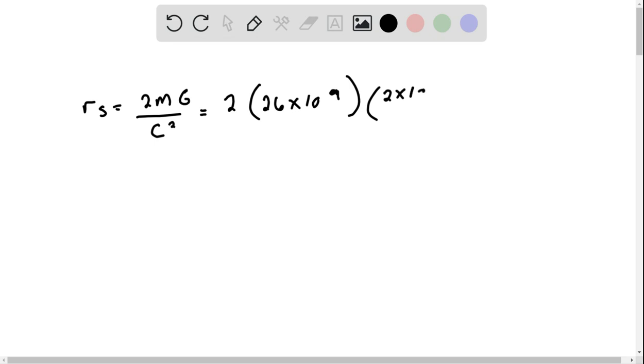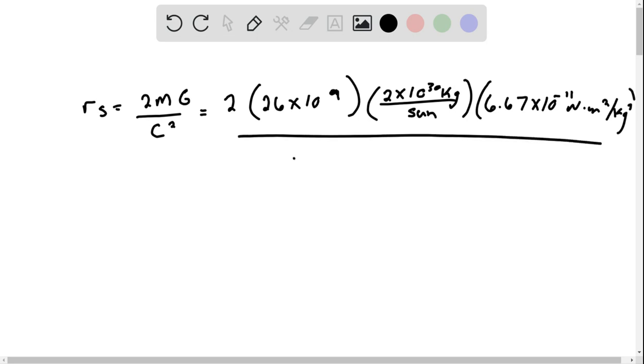Divided by the gravitational constant, which is 6.67 times 10 to the negative 11 Newton meters squared per kilogram squared.